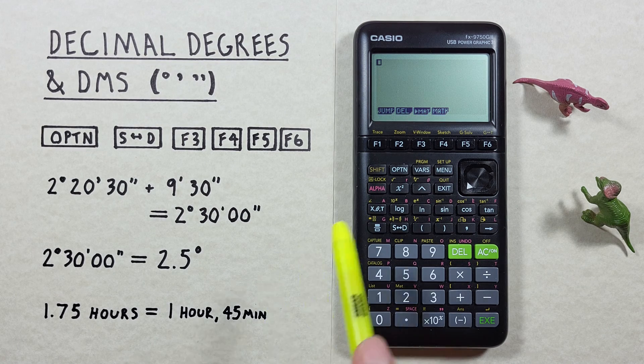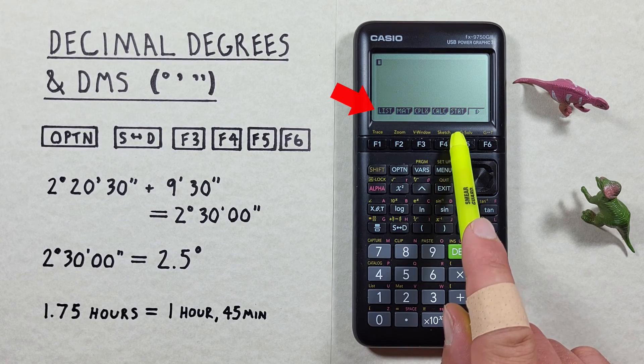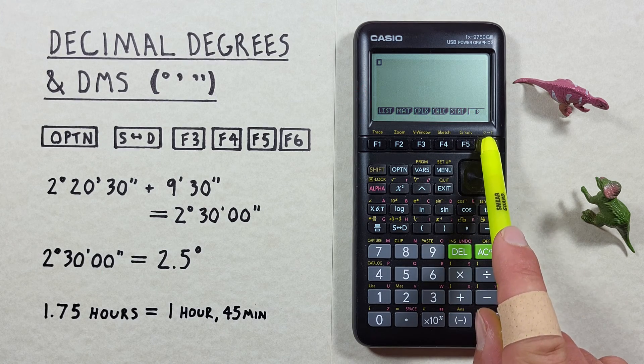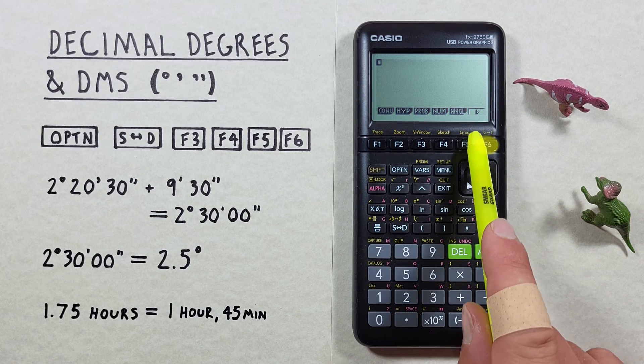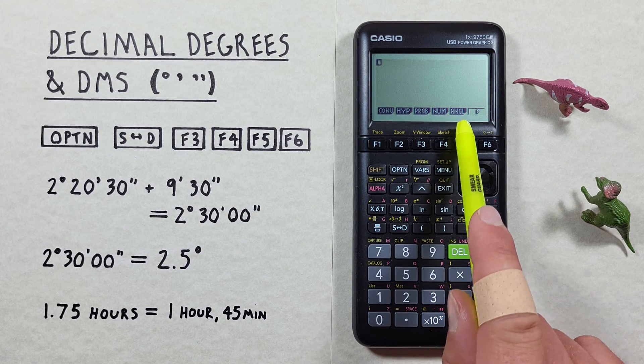To do that first we hit the option key so that we see this list of options at the bottom here. We need to hit the F6 to go to the next set of options and we see here under F5 angle. That's what we need so we hit F5.